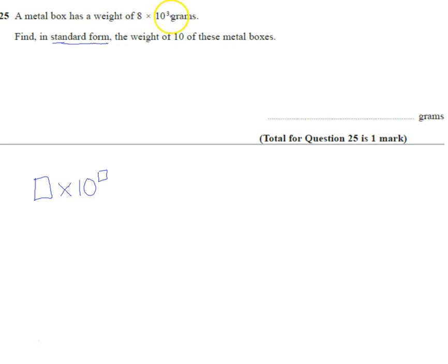So 8 times 10 to the power of 3, well that means 8 times 10 is 80, times it by 10 again a third time, or this means 8 times 10 to the power of 3 is eight thousand. So a box weighs 8,000 grams.